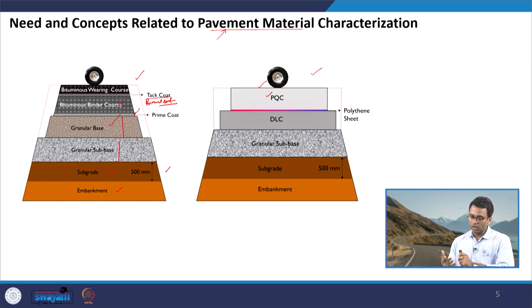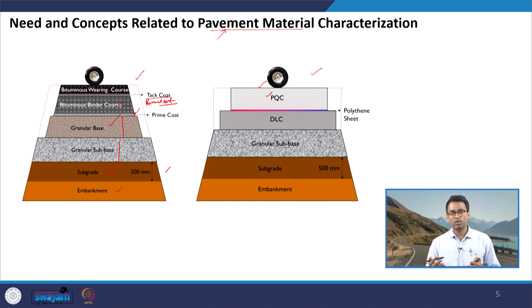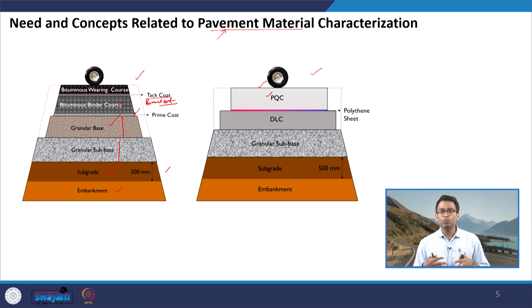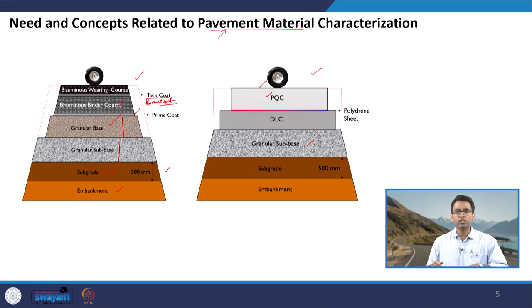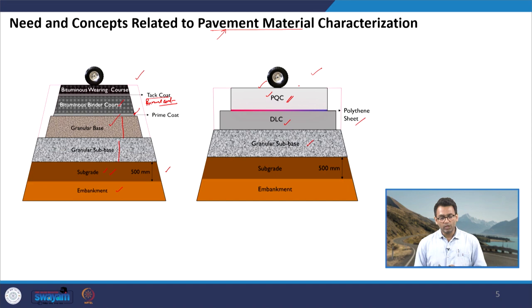On the other hand, in the cross-section of a concrete pavement, the lower part remains the same — we have embankment and subgrade above which we construct other layers. In concrete pavement, other intermediate layers are not as critical because the concrete slab itself can take off most of the load coming on the surface. However, because of other criteria such as erosion of the layer below or permeability requirements, other layers are also used. For example, we have a granular sub-base above which we put a stabilized layer — typically DLC or dry lean concrete — then a polythene sheet to eliminate friction between the two layers, and then the PQC or pavement quality concrete placed at the top.